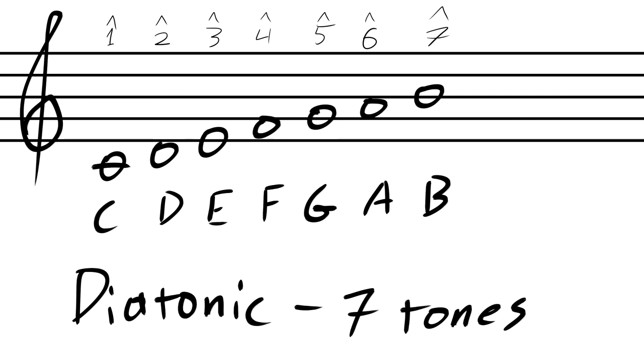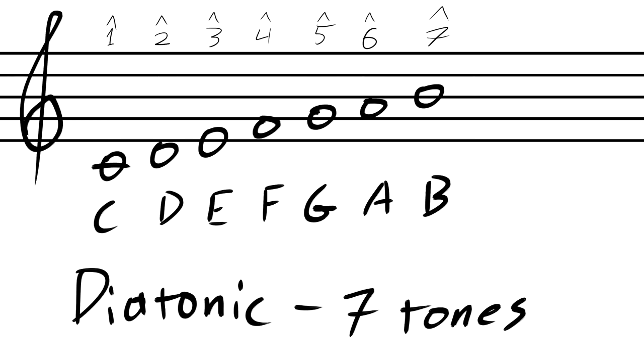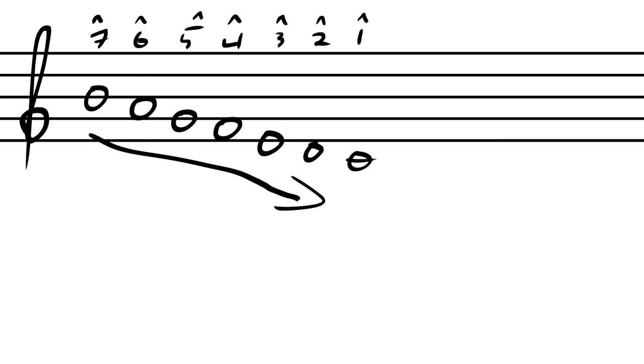These are not to be confused with intervals, as intervals are relative to the other notes, whereas these scale degrees are pretty much fixed. For example, if you travel downward from C, B is still the seventh scale degree. And this is something to remember because it is important for later.